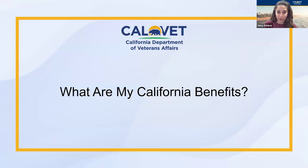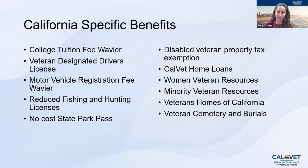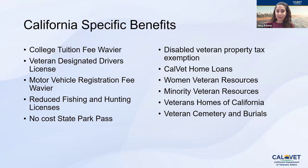Living in California you have an array of benefits. Most require a disability rating to be established first. We have the College Tuition Fee Waiver — by far the benefit that gets the most questions. With this benefit, you can send your dependents to school from general education all the way up to their doctorate without paying tuition or fees at any state-funded school: any California Community College, California State school, or UC. There are four ways to qualify.